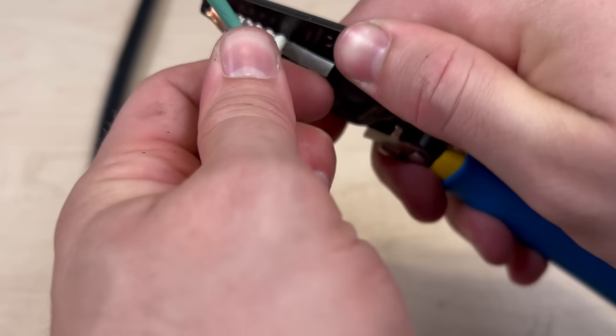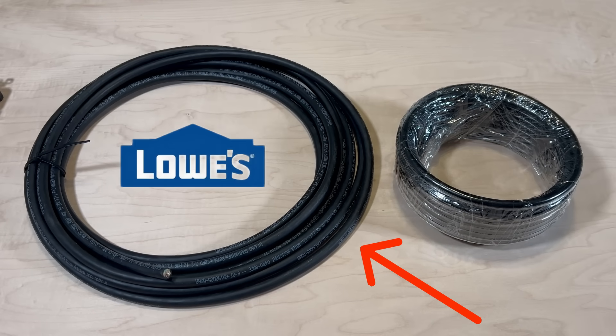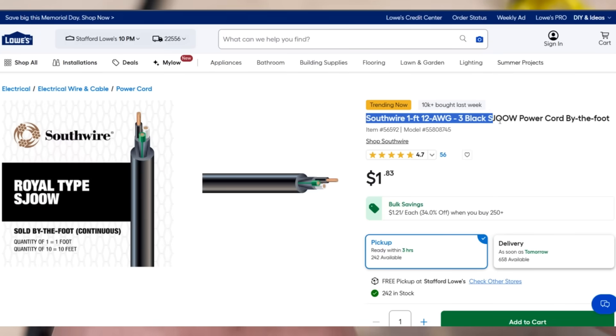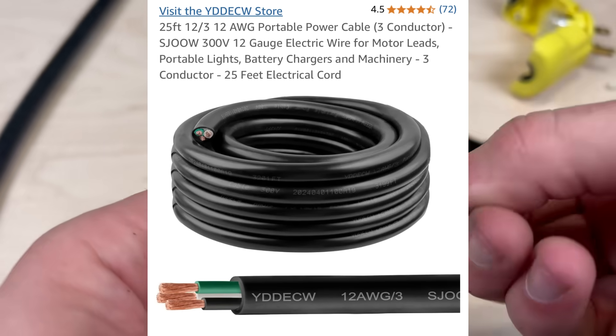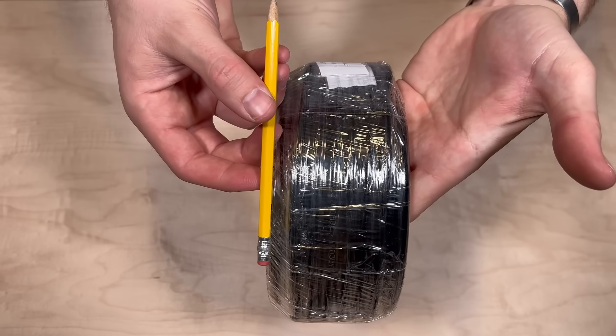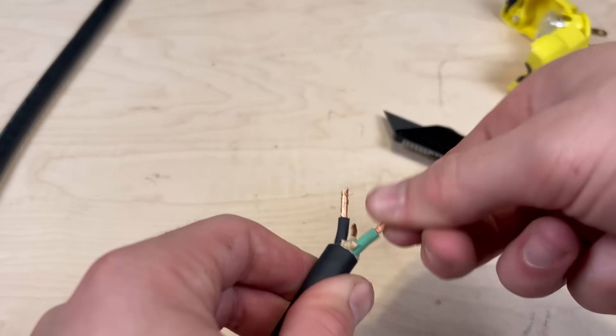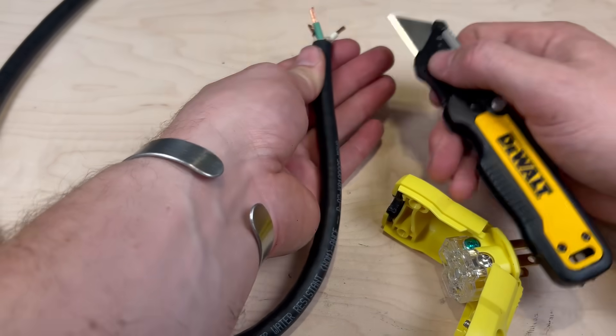Now you're probably wondering what kind of cable this is. It's this heavy duty 12 gauge 300 volt SJOOW cable from Lowe's. I had originally ordered this similar cable from Amazon but was disappointed when I opened the package and saw just how thin it was. So to make your life easier, I've put links to all of our materials in the video description.